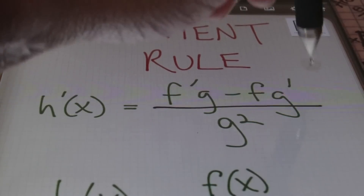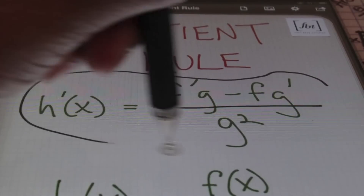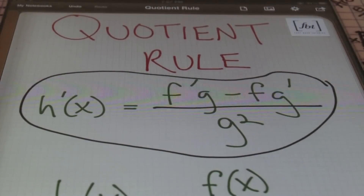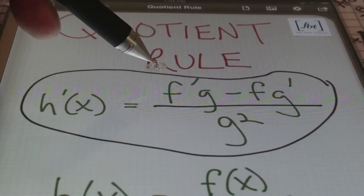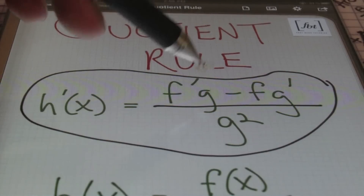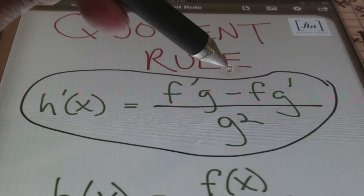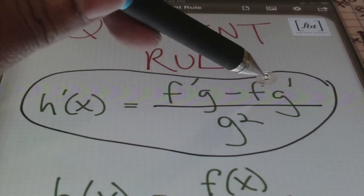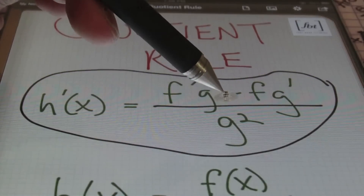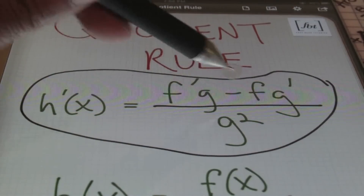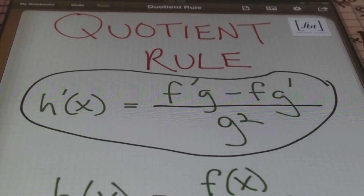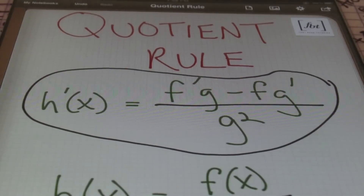The quotient rule, ladies and gentlemen, is this formula I'm enclosing in a circle. In order to take the first derivative of h, I take the derivative of the numerator f times the denominator g, minus the numerator times the derivative of the denominator, all divided by the denominator squared. So f'g minus fg' divided by g squared — that is the quotient rule. You'll see this formula throughout the examples today.